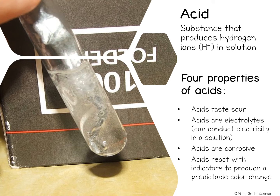The one thing that identifies acids from other substances is that all acids contain at least one hydrogen atom that can be removed when the acid is dissolved in water. When an acid dissolves in water, some of that hydrogen is released as hydrogen ions, or H+. The definition for acid is a substance that produces hydrogen ions in a water solution.